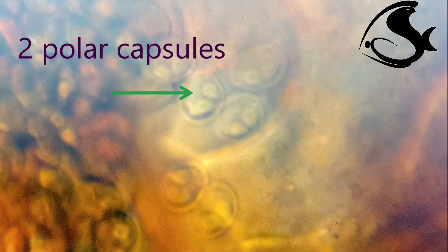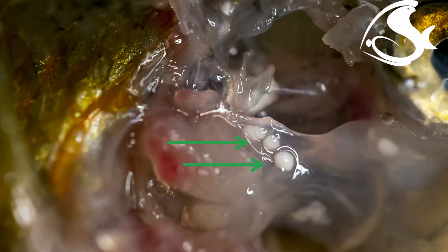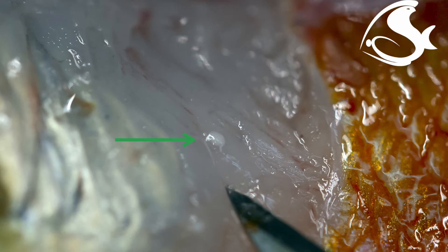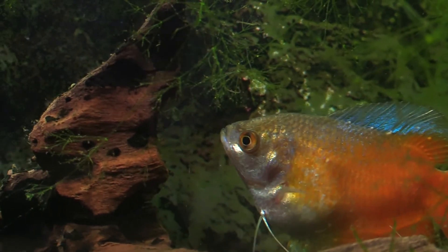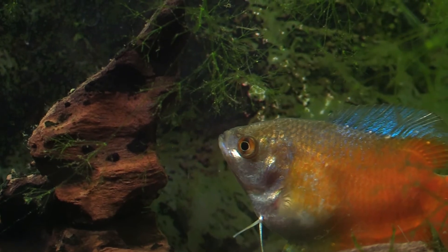Clinical signs vary depending upon the type of myxosporia and the tissue infected. Most myxosporias target specific organs or tissues within one species of fish or a few closely related species, but some can infect a wider variety of fish species.